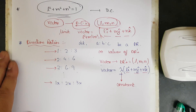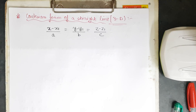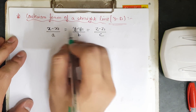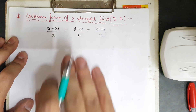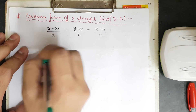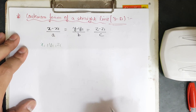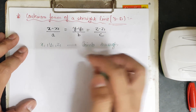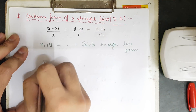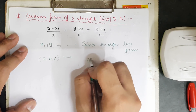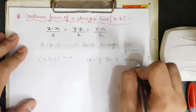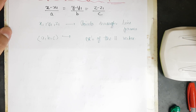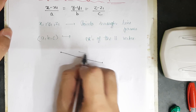Now let us move on to the Cartesian form of a straight line in 3D. The Cartesian form is represented as (x−x₁)/a = (y−y₁)/b = (z−z₁)/c. Here x₁, y₁, z₁ are the points through which the line passes, whereas a, b, c are defined as the DRs of the parallel vector.